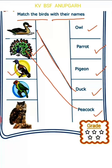Come on, next. Which bird is this? Good. It's pigeon. See where pigeon is — owl, parrot, pigeon. Match this picture with the word 'pigeon'.